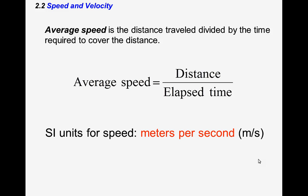Speed and velocity are related concepts. Average speed is the distance traveled divided by the time required to cover that distance — distance over time. The units for speed in physics will be meters per second. We don't use miles per hour because we want all our units to agree: meters, seconds, kilograms. That way we avoid unit-mismatch errors.